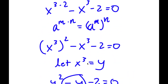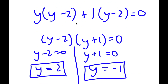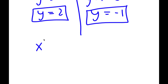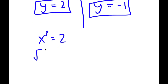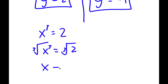Now recall how we let x to the power of 3 equal to y. So if x to the power of 3 is equal to y and we have two values of y, let's first start with y equals 2. So x to the power of 3 equals 2. I'm going to take the cube root on both sides. Cube root of x to the power of 3 is x, so x is equal to cube root of 2.